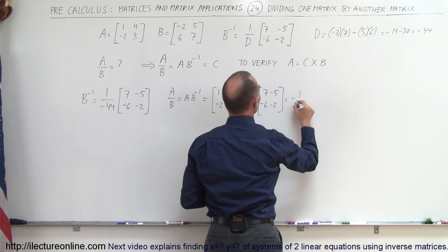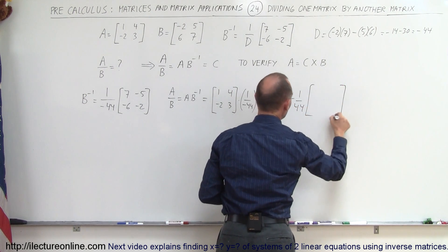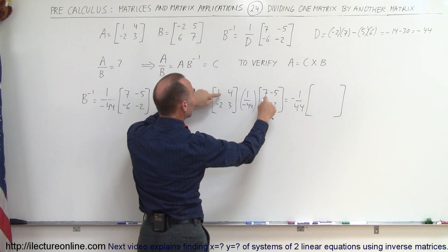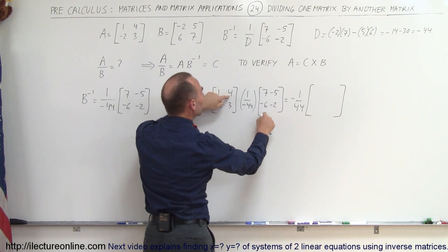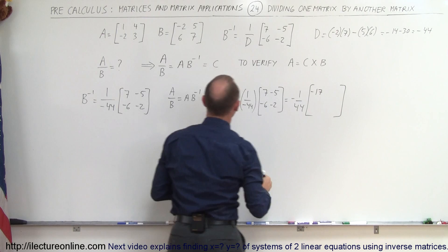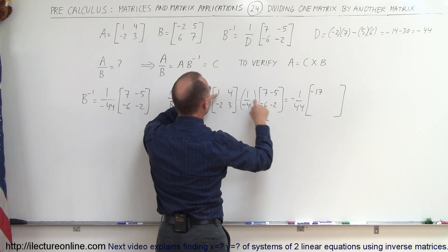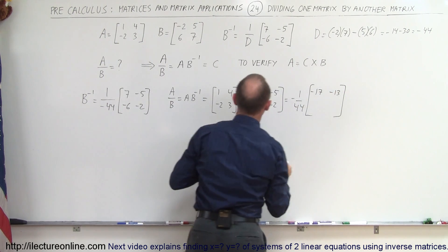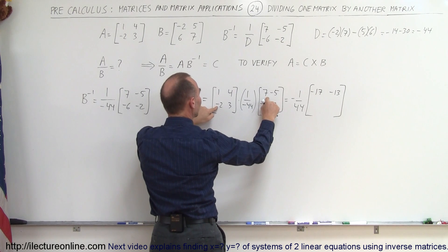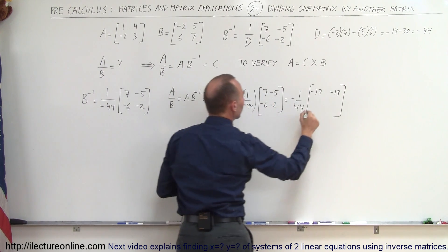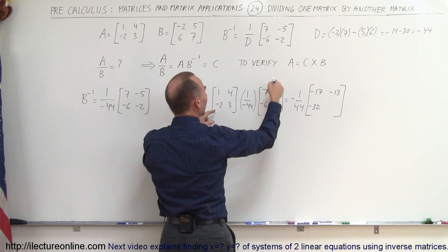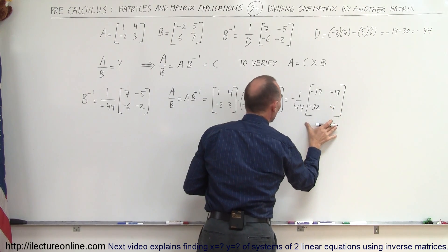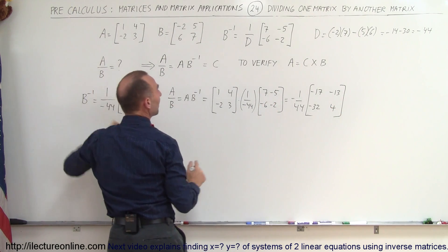This equals minus 1 over 44 times the product of the two matrices. Multiplying row by column: 7 plus negative 24 gives minus 17; minus 5 minus 8 gives minus 13; minus 14 minus 18 gives minus 32; and positive 10 minus 6 gives positive 4. This is the quotient of matrix A divided by matrix B.